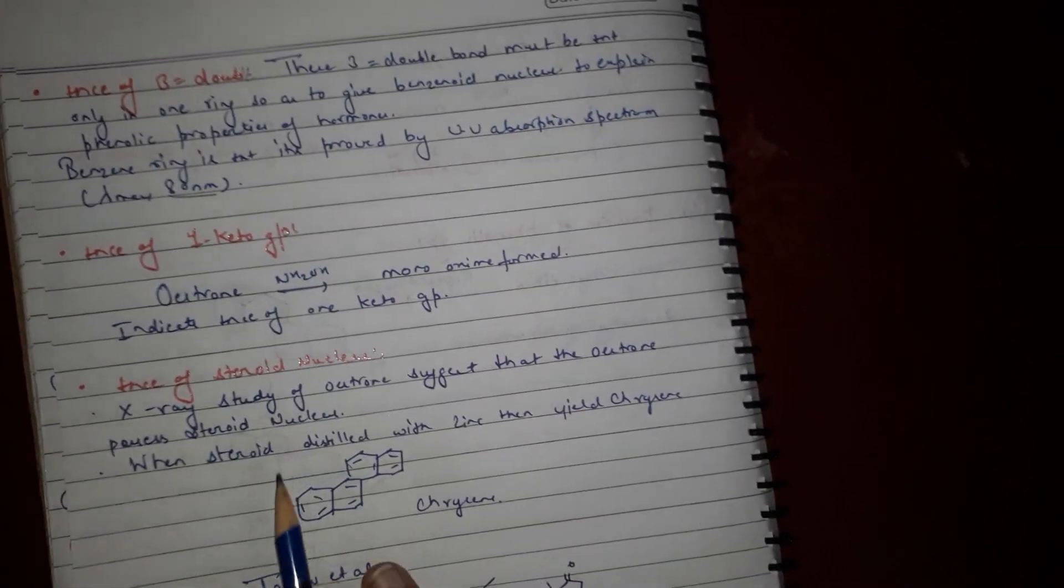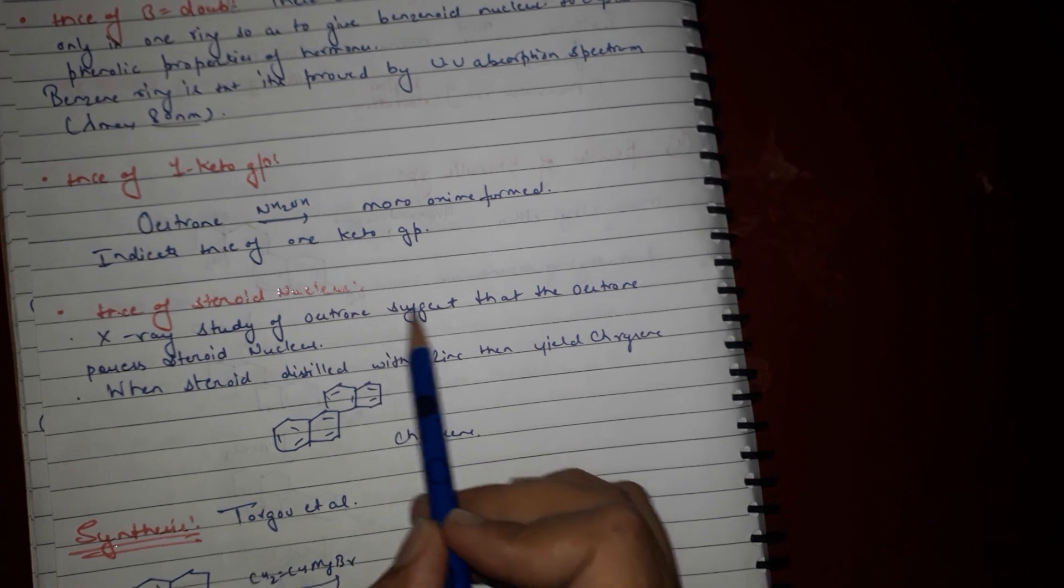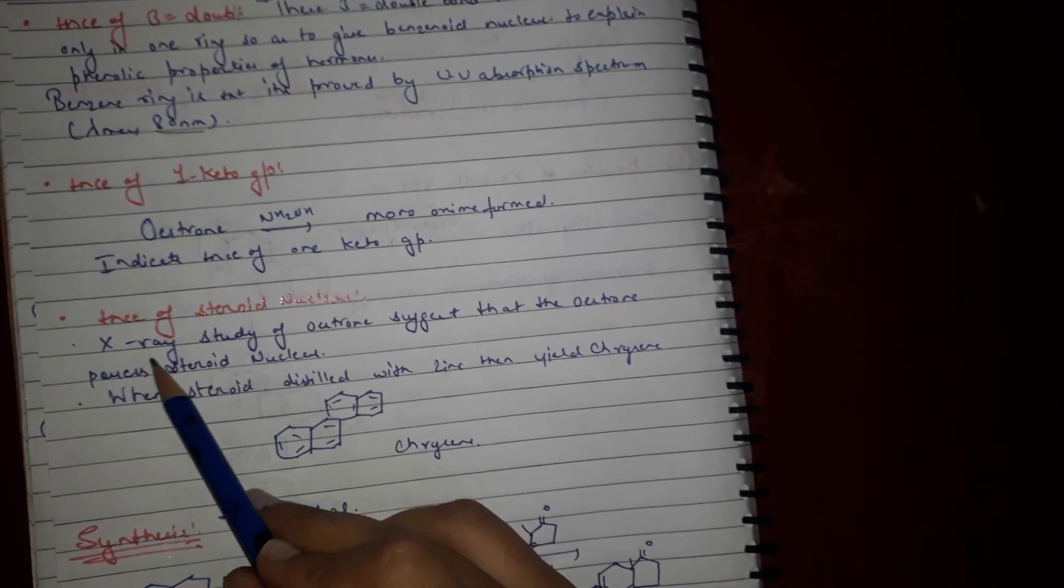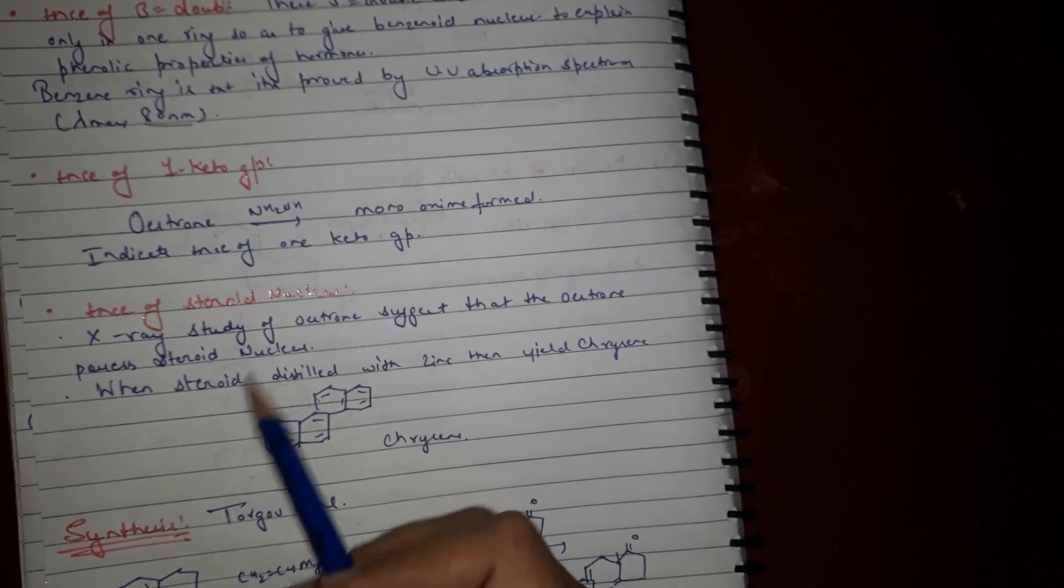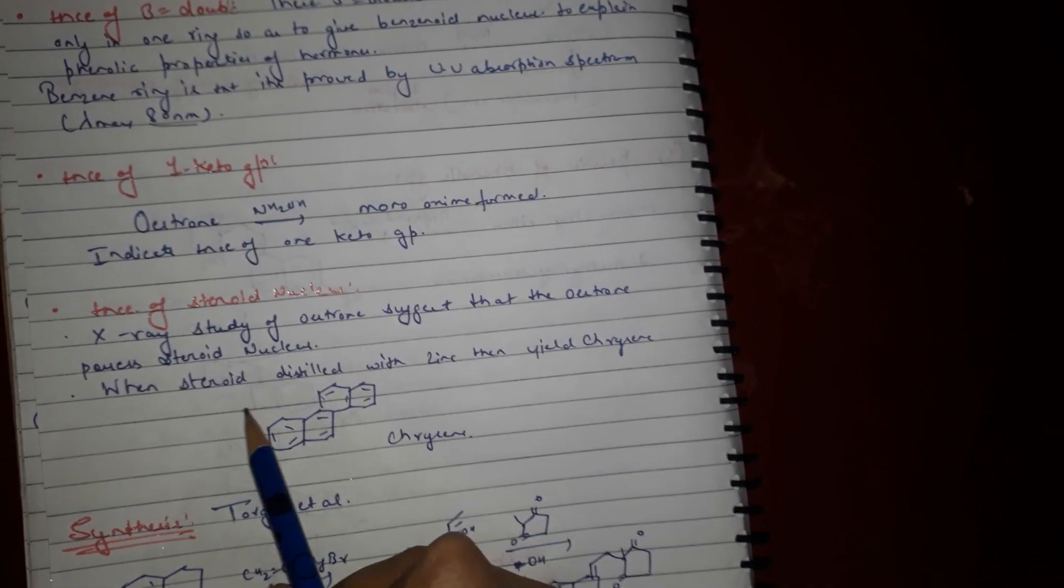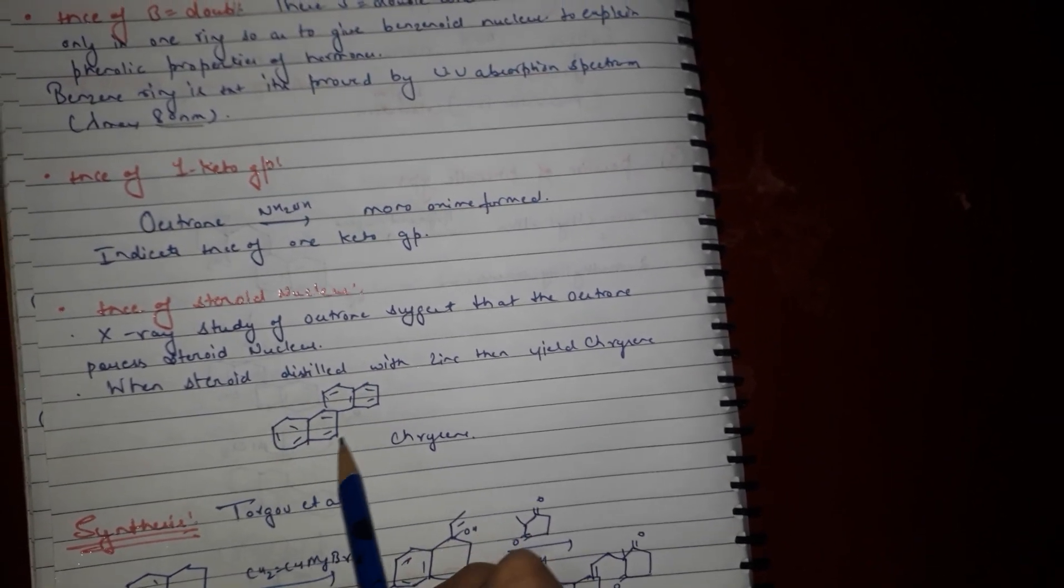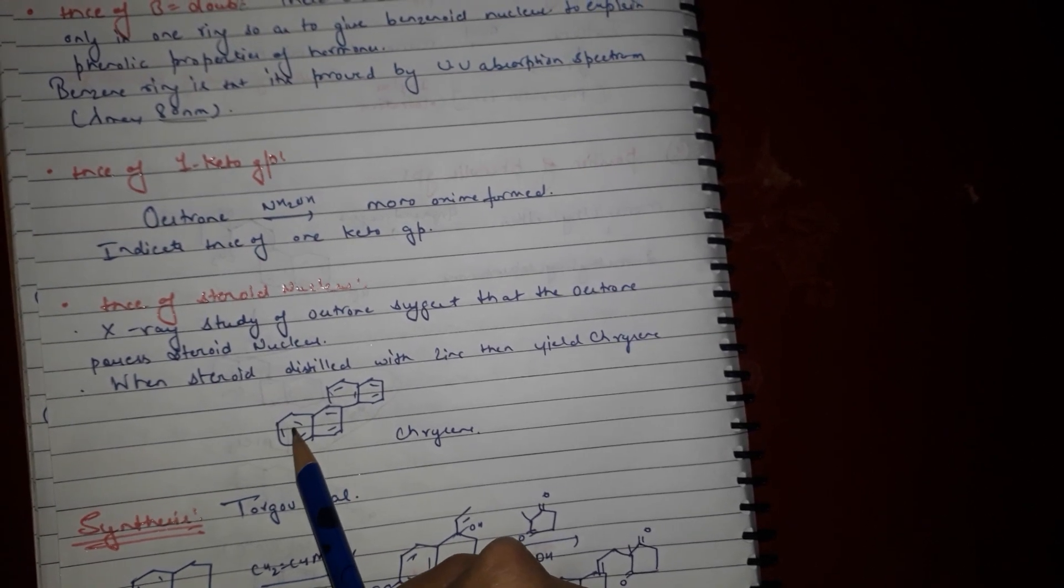For the steroid nucleus, X-ray study of estrone was done which suggested that estrone possesses a steroid nucleus. Steroid distillation gives chrysene, which consists of four six-membered rings.